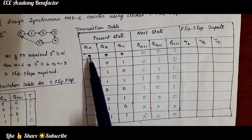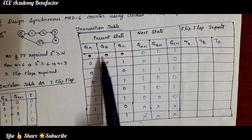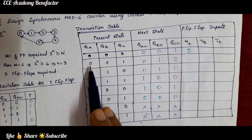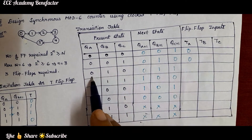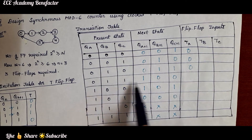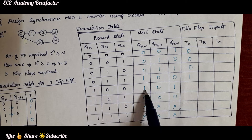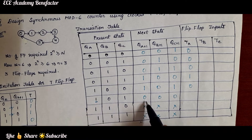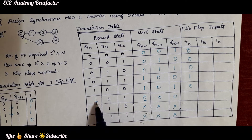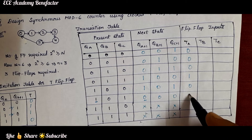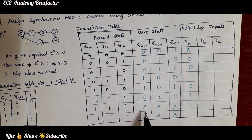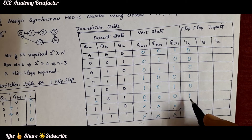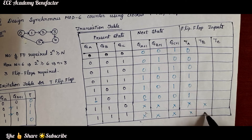Now we compare QA and QA+1 to fill the TA column. For states where QA stays 0, TA is 0. When QA transitions from 1 to 0 (state 5 going to state 0), there is toggling, so TA becomes 1. For don't care states 6 and 7, TA is marked as X.